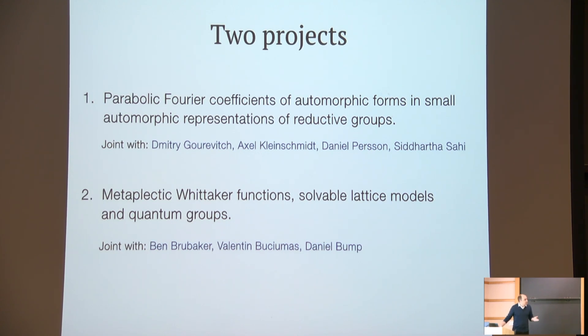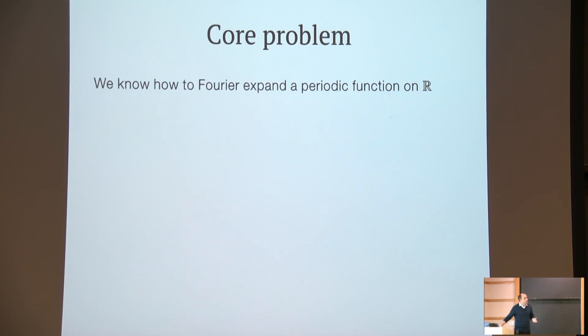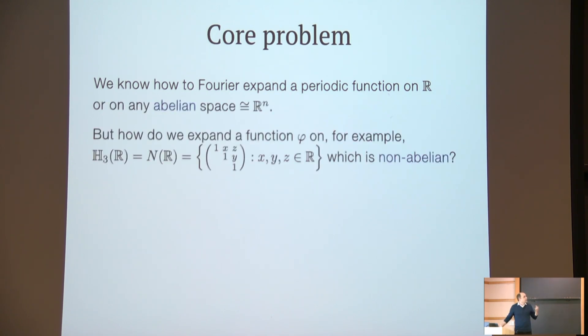If you're interested in any of these or related topics, we'd be very happy to talk. But today I will focus on only the first project because of time constraints. So let's start with the core of the problem of the difficulties of computing these Fourier coefficients. We all know how to Fourier expand a periodic function on the real line or any abelian space like R^n, but how do we expand the function phi on, for example, the Heisenberg group?